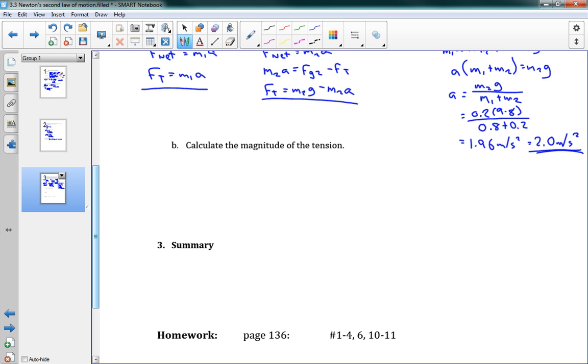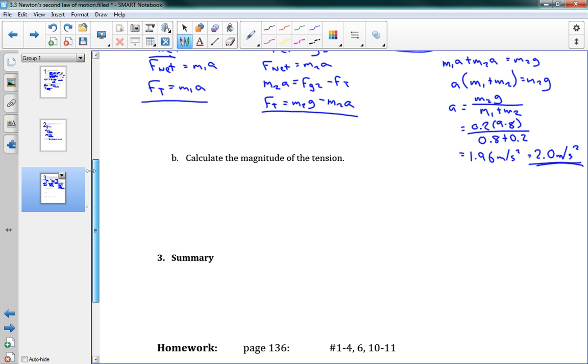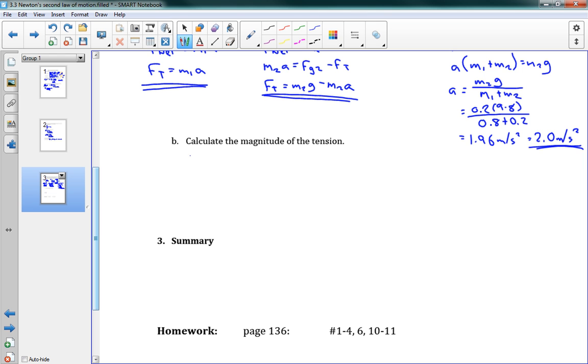Okay, at the bottom here we want to find the magnitude of the tension. Well, we had a few statements for tension up here. I'm going to use the first one, Ft equals m1a. Well, we know m1. We know acceleration. So this gives us 1.568 newtons. And if we round that down or up, we've got 1.6 newtons total.